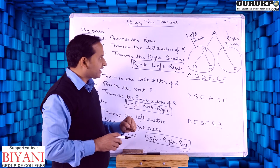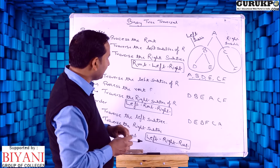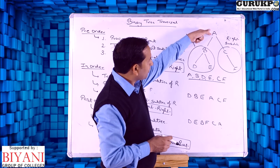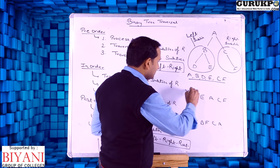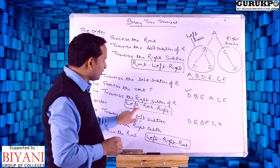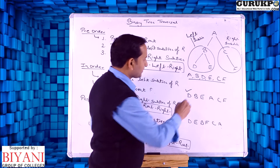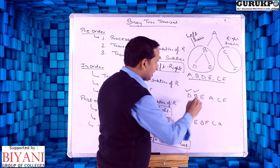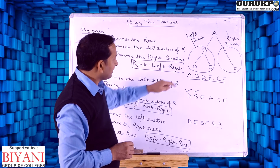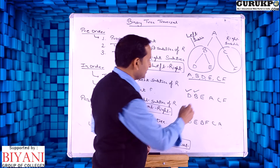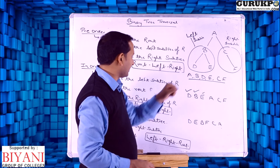Now taking the same example again — first we take the left subtree. The left of A is B, and the left of B is D, so first we traverse D. After left we go to the root; the root node of D is B. Then third is right — the right of B is E. Now we traverse A — this completes the left subtree.